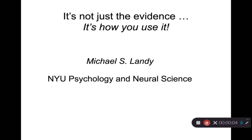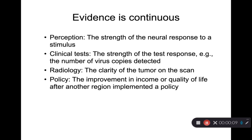Today I'm going to tell you it's not just the evidence you've gathered, it's how you use it. Evidence is continuous. In my field — perception, for example — the strength of the neural response to a visual stimulus can be small or large. In a clinical test, the strength of a test response, for example the number of virus copies detected in a COVID test, can be small or large. Same with the clarity of a smudge on an x-ray or MRI scan indicating potentially the presence of a tumor, or the evidence of a test policy applied as social policy in terms of its benefit for the population.